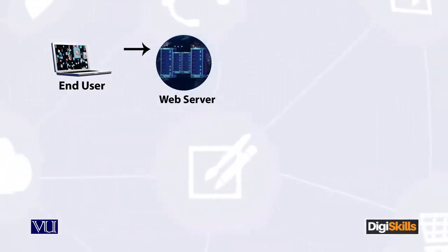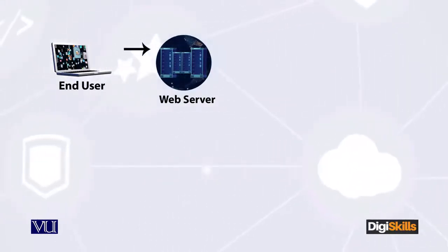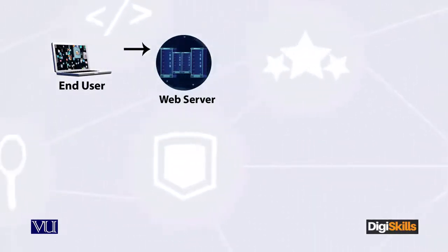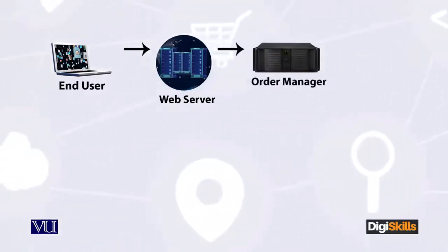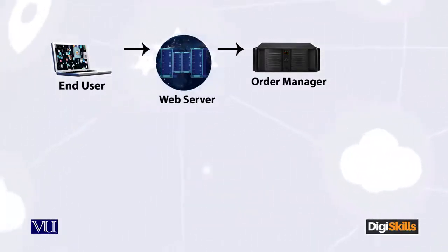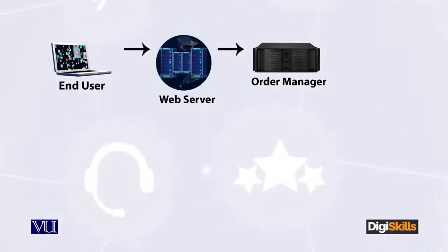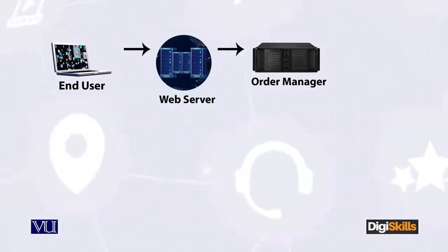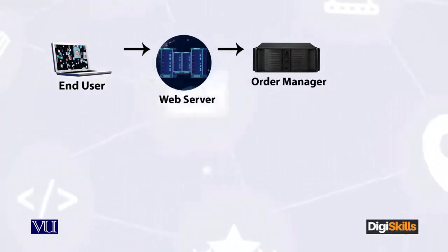Step number two is that there will be something offered by the vendor over the internet, which I am calling the order manager. The order manager — you can think of it as a box — receives the request from the web server, which comes from me as an end user, and is responsible for fulfilling my order.